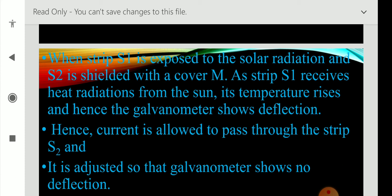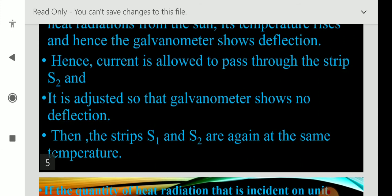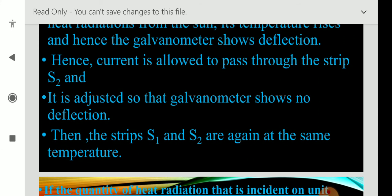Hence, because of deflection, a current is allowed to pass through the strip S2. Then both strips S1 and S2 will be adjusted to the same temperature. Then no deflection will be found, means the deflection in galvanometer goes to null, no deflection arrangement, because the strip S1 and S2 temperature will be the same.